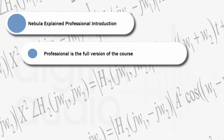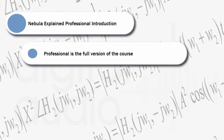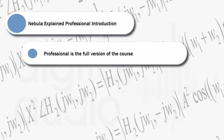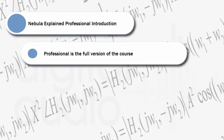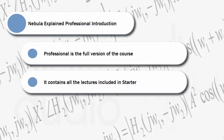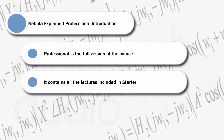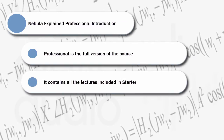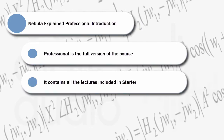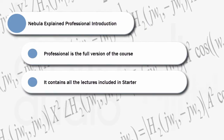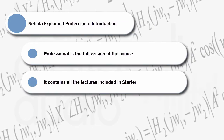Professional is the full version of the course and contains all the detailed information about using Nebula that the professional user demands. It contains all the lectures included in Starter and builds on this to provide all the specialist knowledge to transform the way you work with Nebula and the results you can achieve.